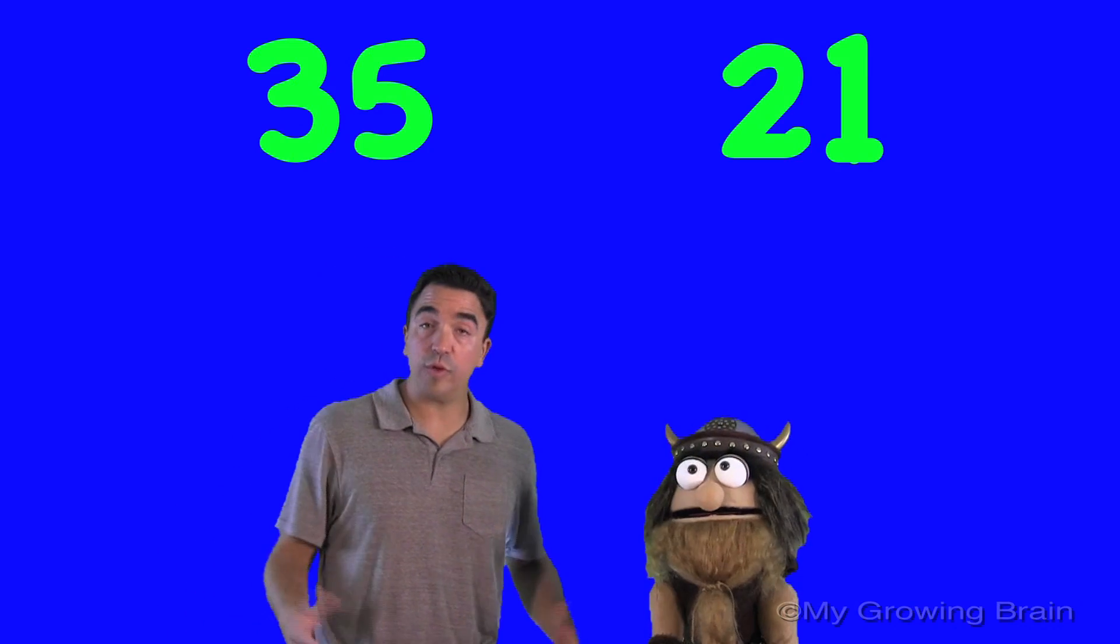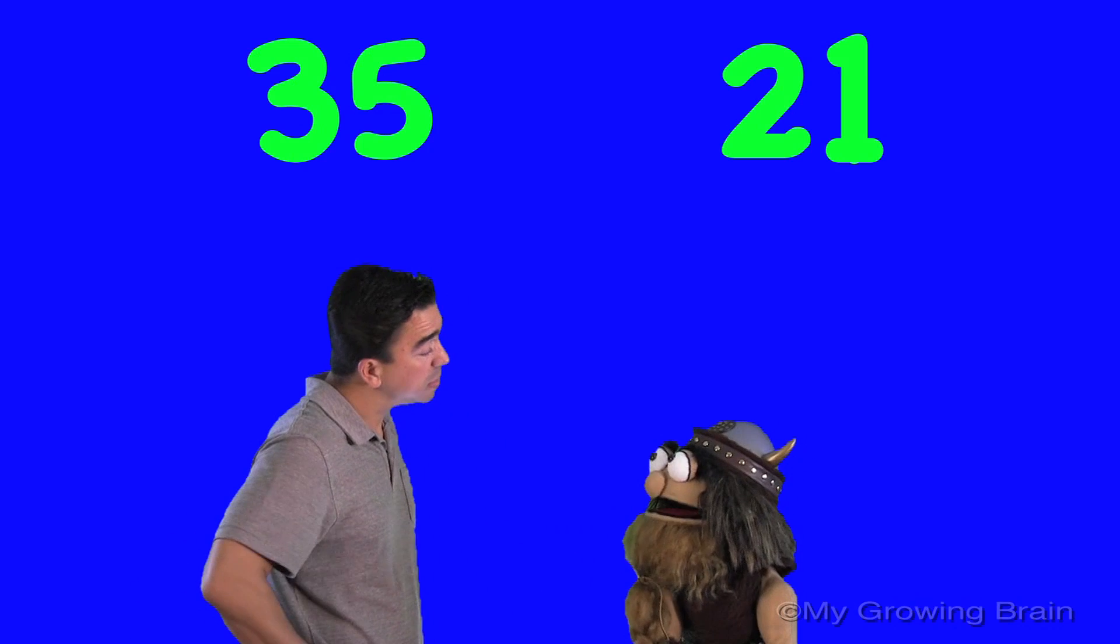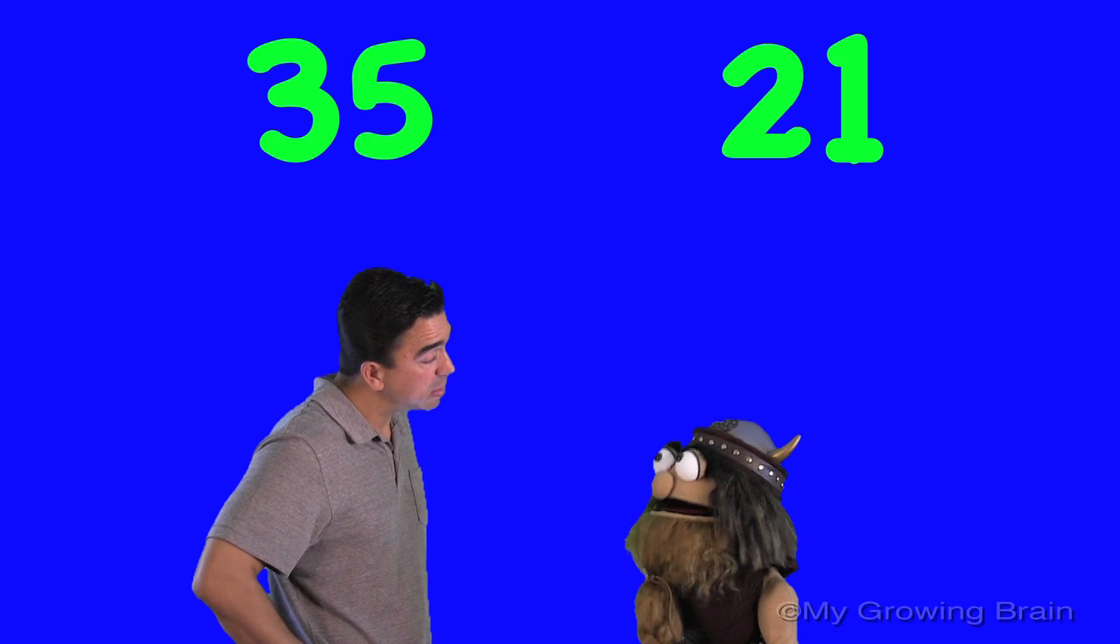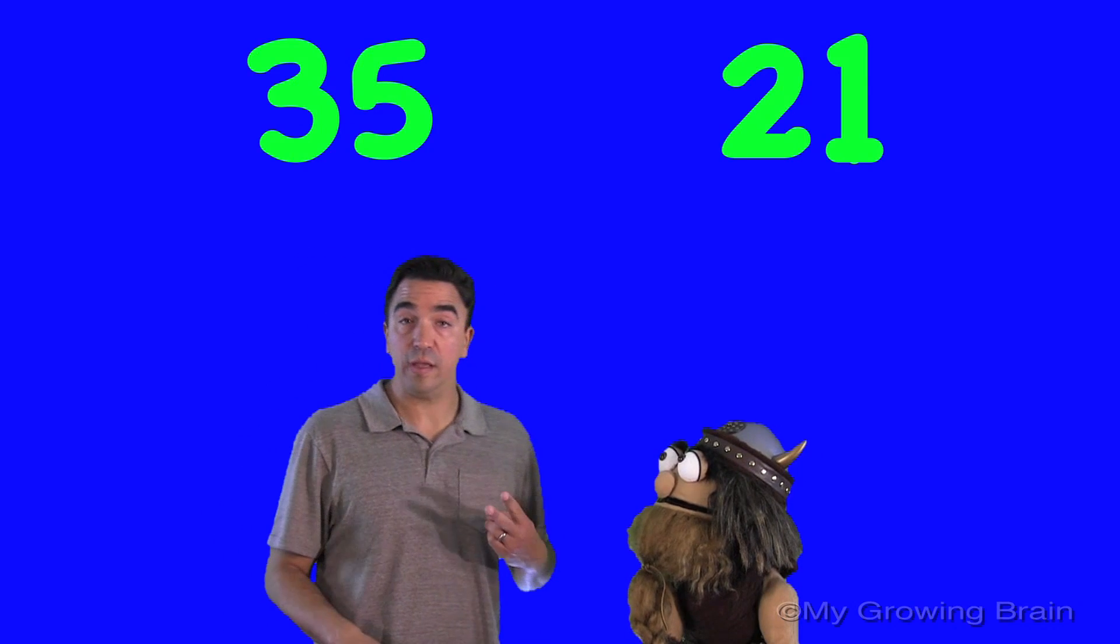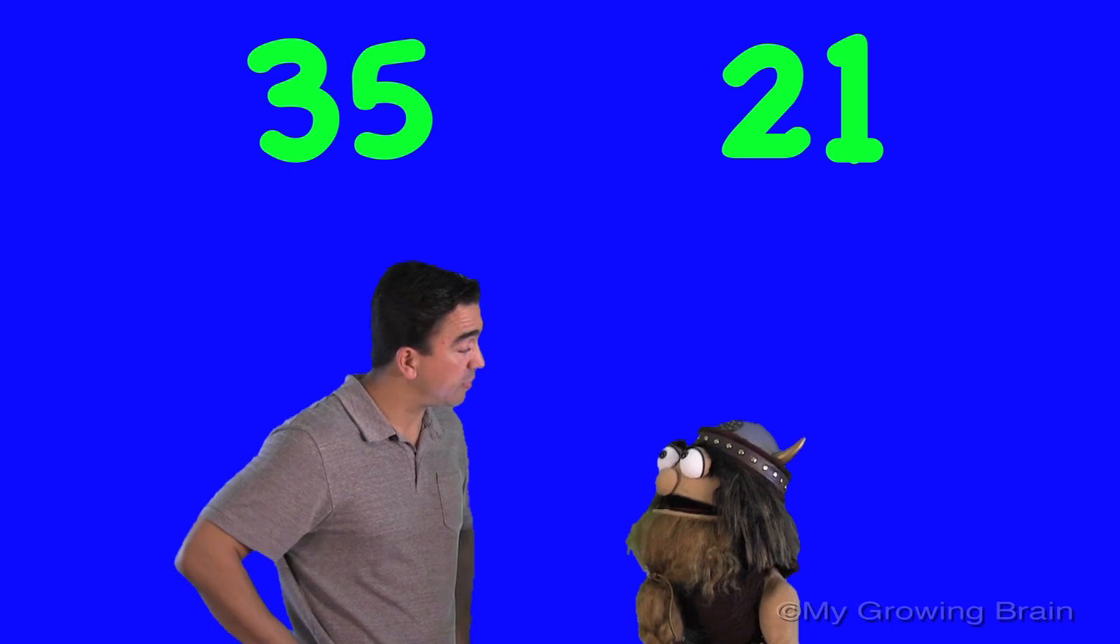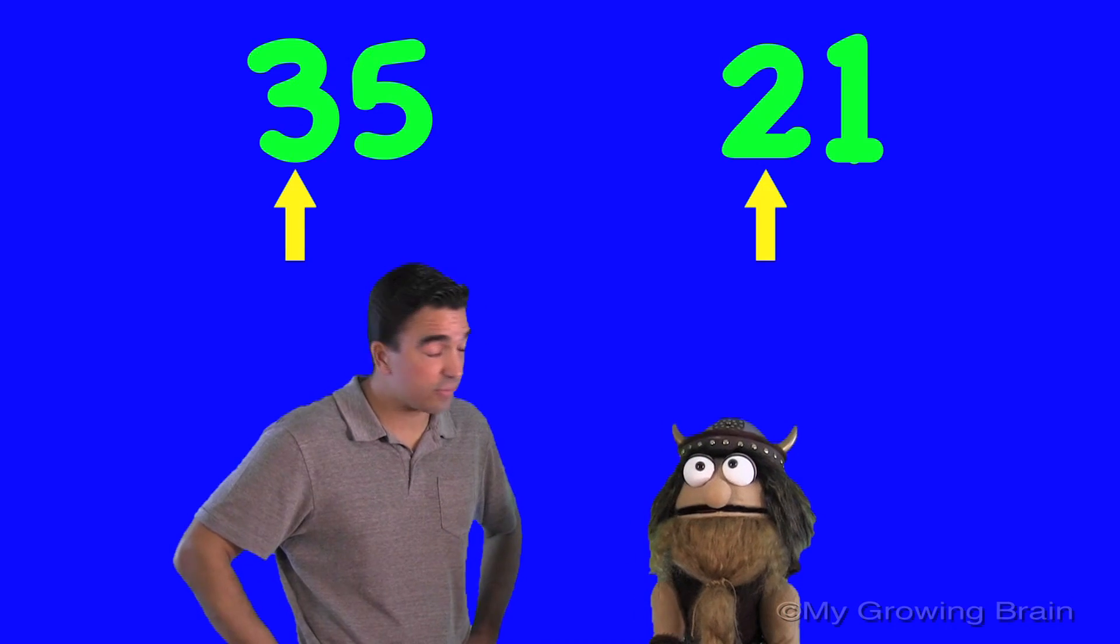Alright. So, which one of those numbers is the bigger number? Well, 5 is bigger than 1. But in a two-digit number, Olik, we always start with the tens. Oh. Okay, Coach Mike. Yeah. The tens place. The tens place.